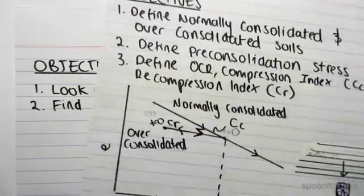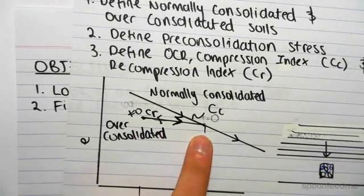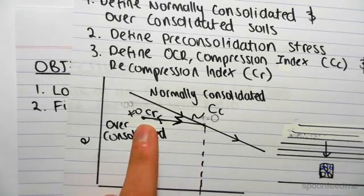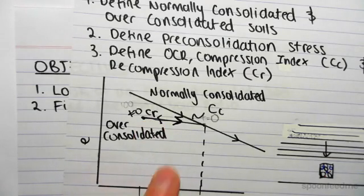We know that from our previous video, the over-consolidated soil is when the pre-consolidation stress is greater than the current stress we're experiencing at time zero or anywhere along this line at this particular time.